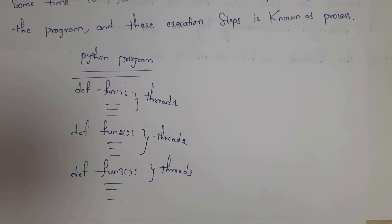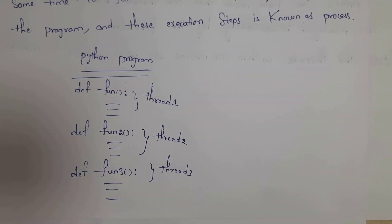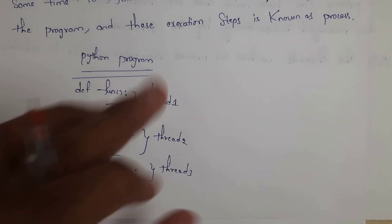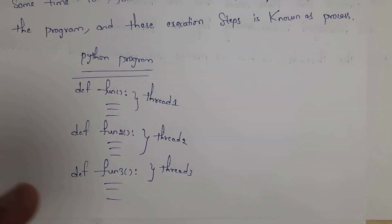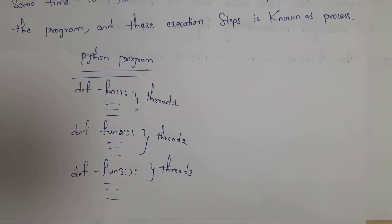Each and every process contains threads. There may be a single thread or multiple threads in a single process. For example, in this example there are three functions — this function is handled by thread one, this function is handled by thread two, and this function is handled by thread three.